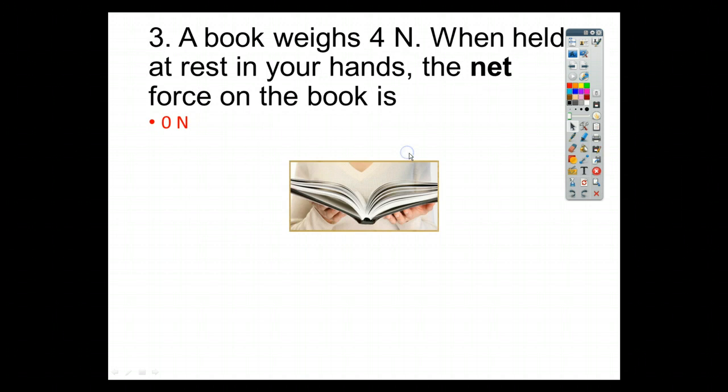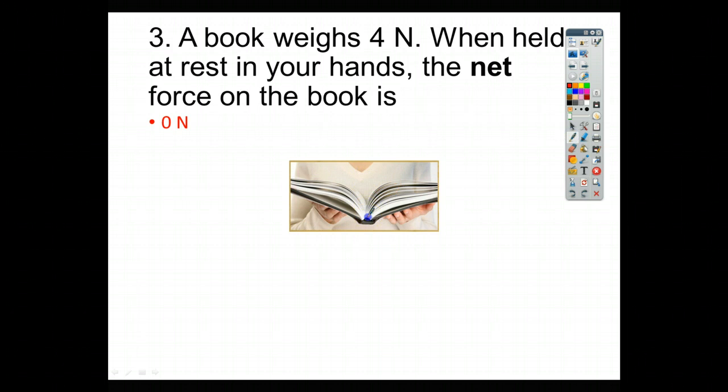For number 3, it says a book weighs 4 newtons. When held at rest in your hands, the net force on the book is 0 newtons. We know that starting at the book and coming down is the force due to gravity, and that would be mg. But the lady is also holding the book up, and we call that the normal force. And it would be the same amount in the opposite direction. So, if the book was 10 newtons, she has to use 10 newtons of force in order to hold it up. If this one is negative and I add them together, I end up with 0 newtons of force overall.